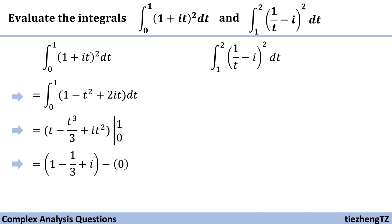So we get one minus one-third plus i, and then minus zero, because when we substitute zero for t the whole part is also zero. Then we just do the simple math and we get the final result, which is 2/3 + i.